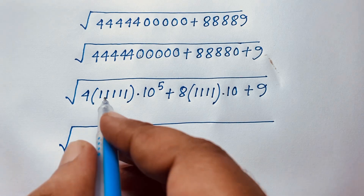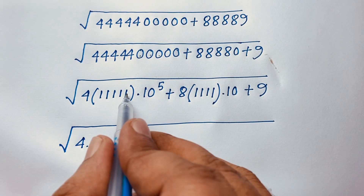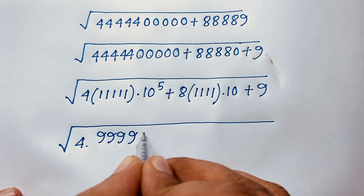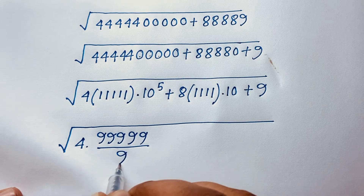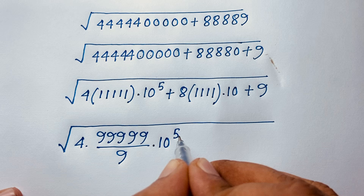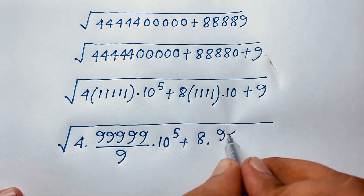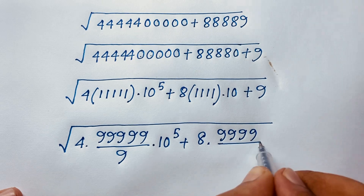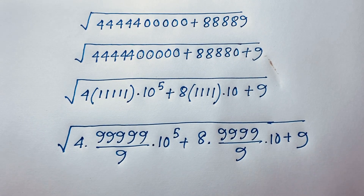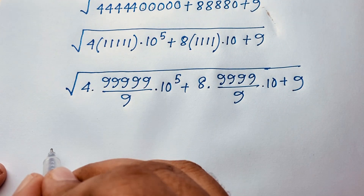Then here is 4, so this 4 times 111111 — it will be 999999 divided by 9. So this divided by this it will be this times, and here is 10 to the power 5. Plus 8 times, and here is 10 to the power 5, plus 8 times — it is also 1234 divided by 9 times 10, plus 9.